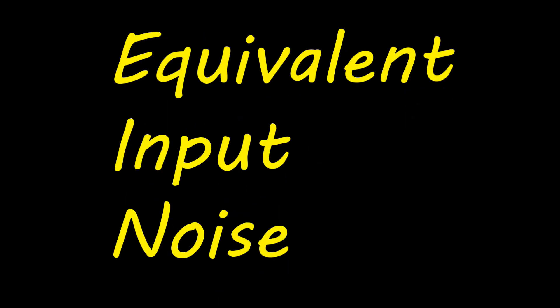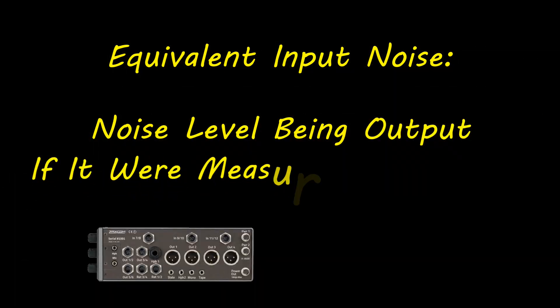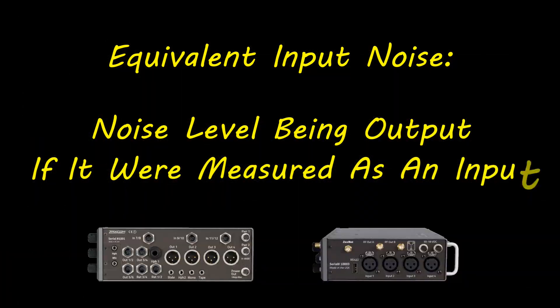EIN is an abbreviation for Equivalent Input Noise, and in simplest terms, it's the amount of noise being output if it were measured as an input. Now that we're as clear as mud, allow me to explain.